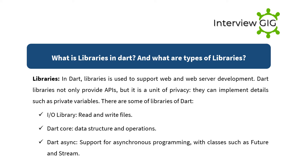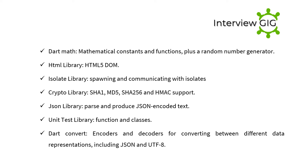Dart libraries include: dart:io for reading and writing files; dart:core for data structures and operations; dart:async for asynchronous programming with classes such as Future and Stream; dart:math for mathematical constants, functions, and a random number generator; the HTML library for HTML5 DOM; isolate library for spawning and communicating with isolates; crypto library for SHA-1, MD5, SHA-256, and HMAC support; JSON library for parsing and producing JSON-encoded text; unit test library; and dart:convert for encoders and decoders including JSON and UTF-8.